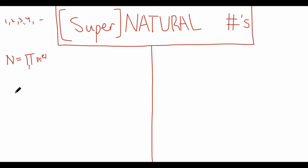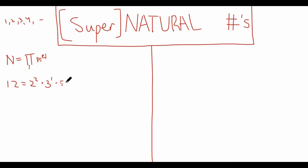For example, if we have a number like 12, then this is equal to the first prime number, 2, to the power of 2 — so p1 equals 2 and e1 equals 2 — times 3 to the power of 1, so p2 equals 3 and e2 equals 1, times 5 to the power of 0, times 7 to the power of 0, and so on.